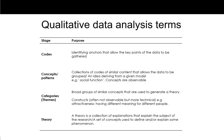Just as an overview of what I mean by codes, concepts, patterns, categories, and theory: a code is an identifying anchor — I like to use the term label. Basically this is a label that you put against data that indicates it is a key point of observation. Within a qualitative set of data there will be lots and lots of observations. A code is something that you have chosen to label or anchor as something that is important to be considered later.